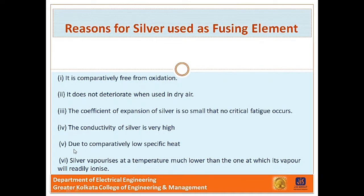Due to comparatively low specific heat, silver fusible elements can be raised from normal temperature to vaporization quicker than other fusible elements. Moreover, the resistance of silver increases abruptly as the melting temperature is reached, making the transition from melting to vaporization almost instantaneous — so operation becomes very fast at higher currents. Lastly, silver vaporizes at a temperature much lower than the one at which its vapor will readily ionize. So when an arc is formed through the vaporized portion, the arc path has high resistance and the short circuit current is quickly interrupted.